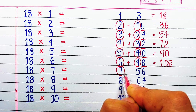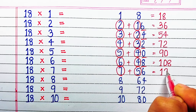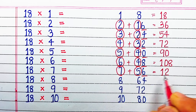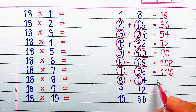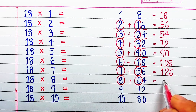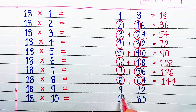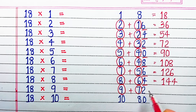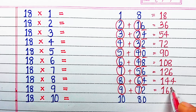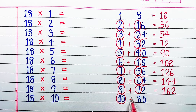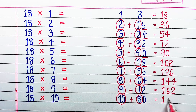Next 7+5=12 and we write 6 as it is, making 126. Now 8+6=14 and then the unit digit 4, making 144. Next 9+7=16 and we write 2 as it is, making 162. Next 10+8=18 and then 0, making 180.